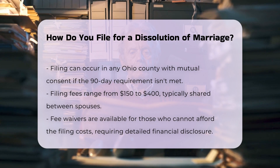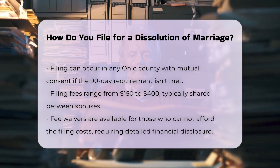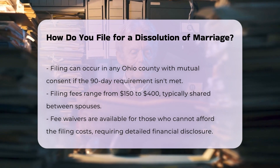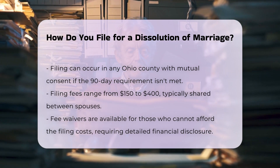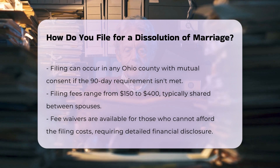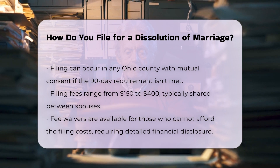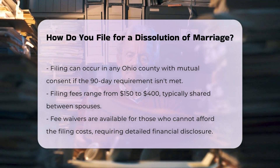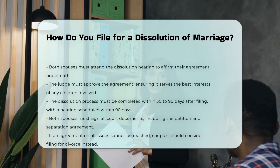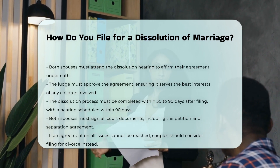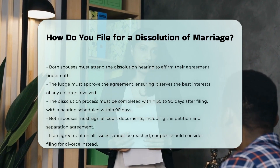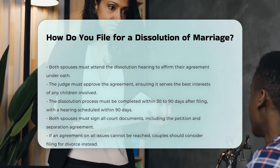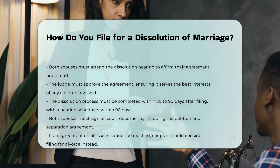At this hearing, you will tell the judge under oath that the agreement was voluntary and that you are both satisfied with it. The judge must approve your agreement, ensuring it meets the best interests of any children involved. The entire process for a dissolution in Ohio must be completed within 30 to 90 days from the day the case is filed with the court, and the court must schedule the hearing within 90 days after the filing date.